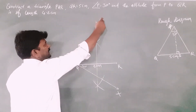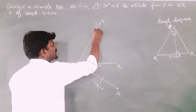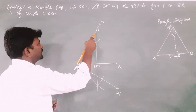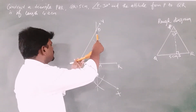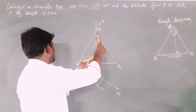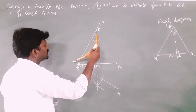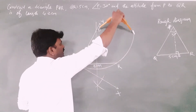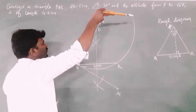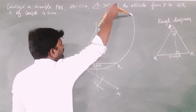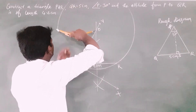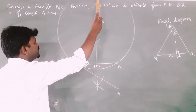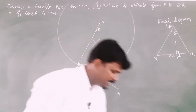The ray QY and the perpendicular bisector intersect at point O. Take the compass and use OQ or OR as the radius. Draw a circle with center O. Note that in your notebook you should draw the full circle - here I may not have enough space on the board, so I am drawing just part of it.